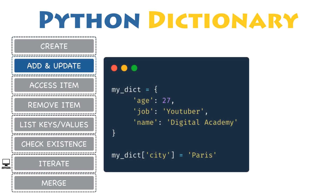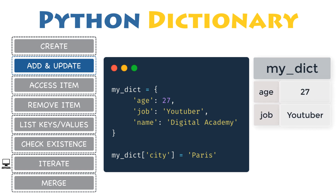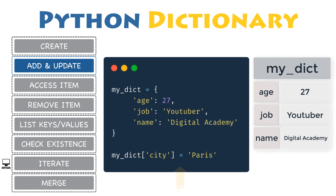Adding or updating dictionary items is very easy. Dictionaries are mutable, which means you can add new items or change the value of an existing item using the assignment operator. If the key is already present, the value gets updated; otherwise, a new key-value pair is added. Here is an example in which a new item is added into the dictionary with the key 'city' and its associated value 'Paris'.